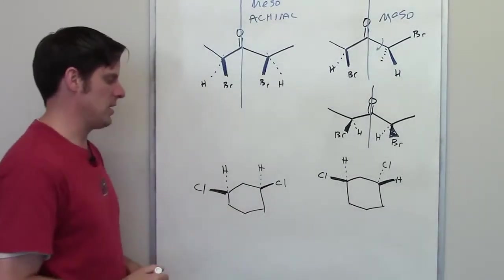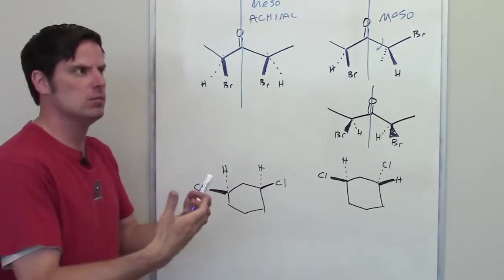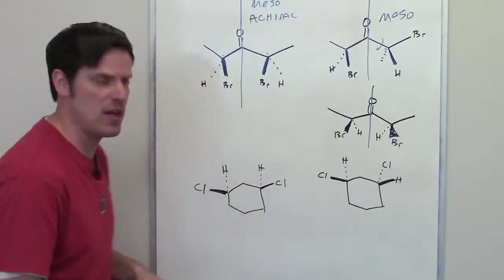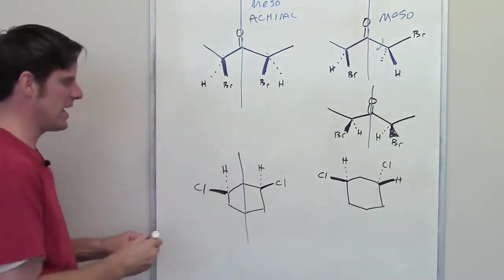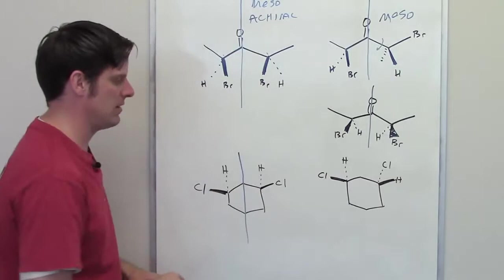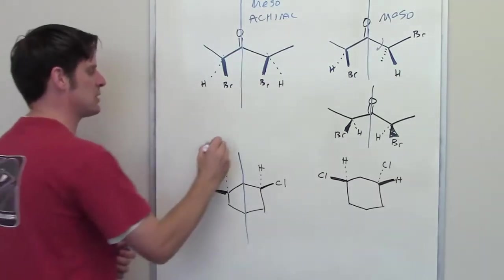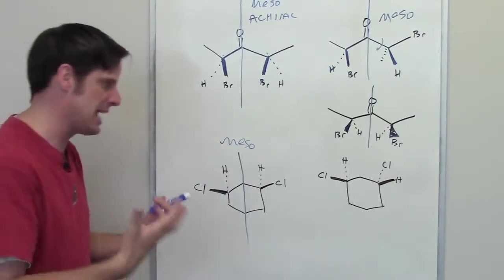Okay, let's take a look at this molecule right here. Can I bisect this with some line and have one half of the molecule look like the mirror image of the other? Well, I hope you guys can see that, yes, I can. I can draw this straight line right down there. The left half looks like the mirror image of the right half. Is this compound meso? Absolutely, which means it will not rotate plane polarized light, which means that it is achiral.